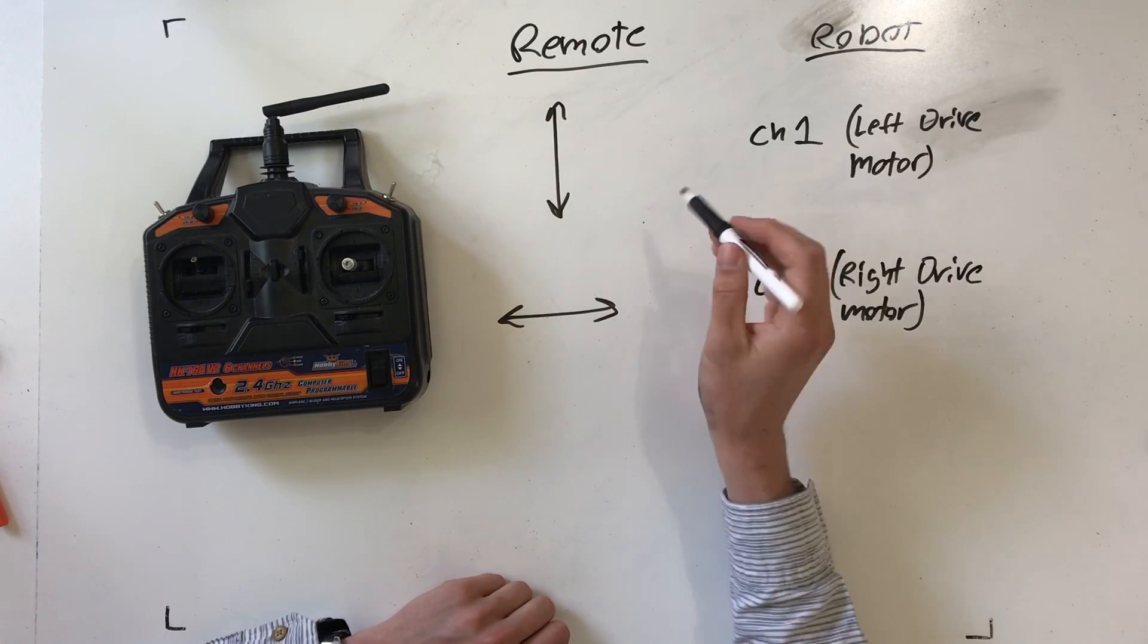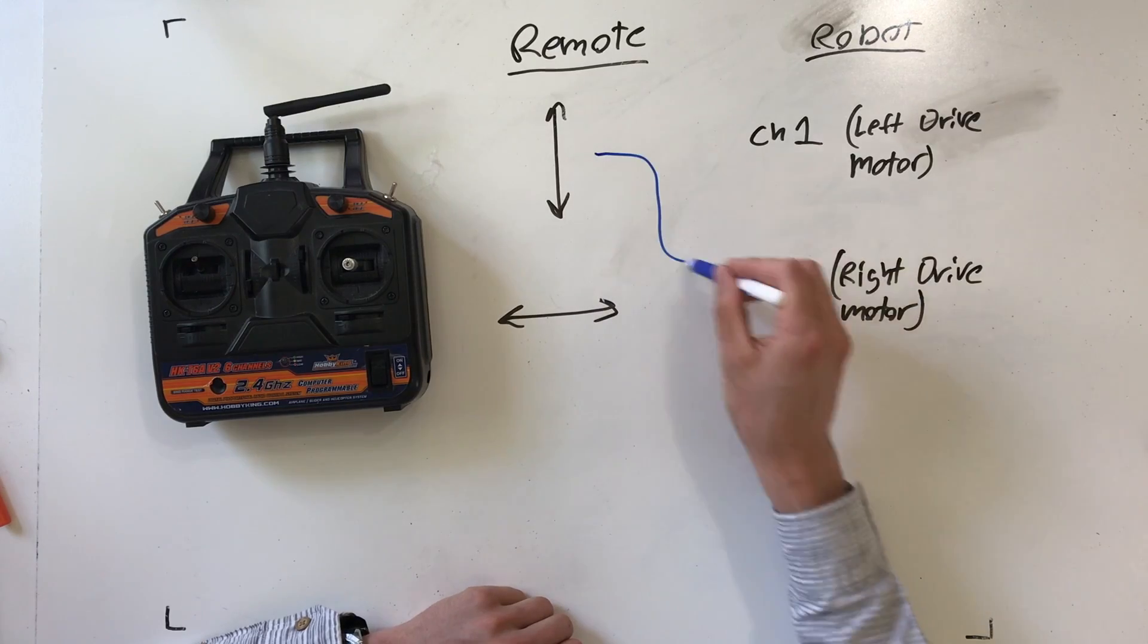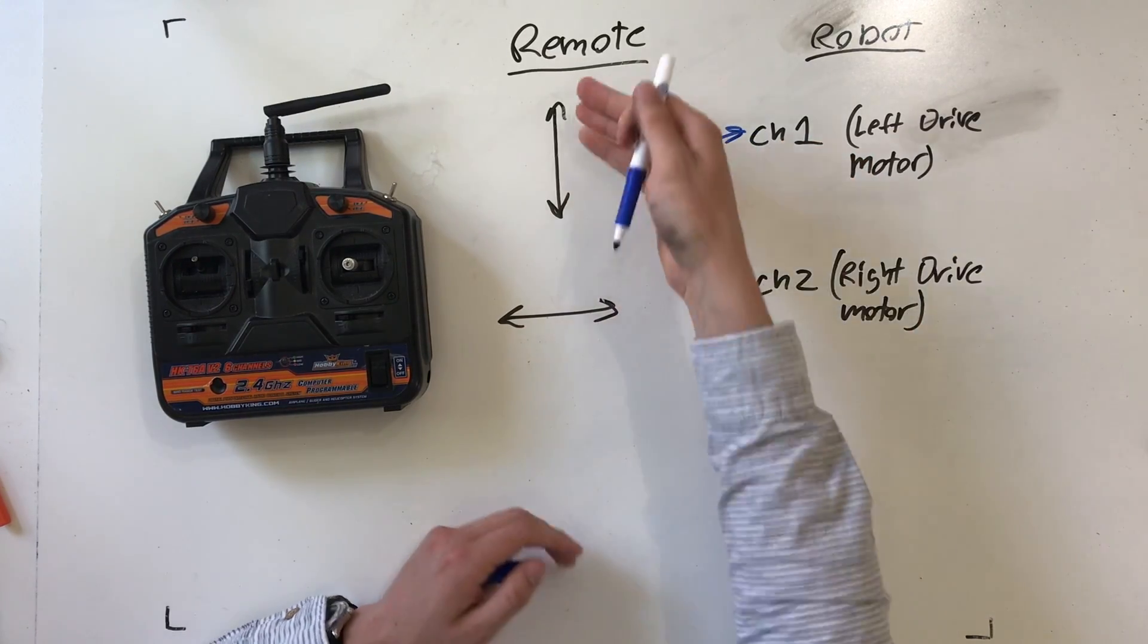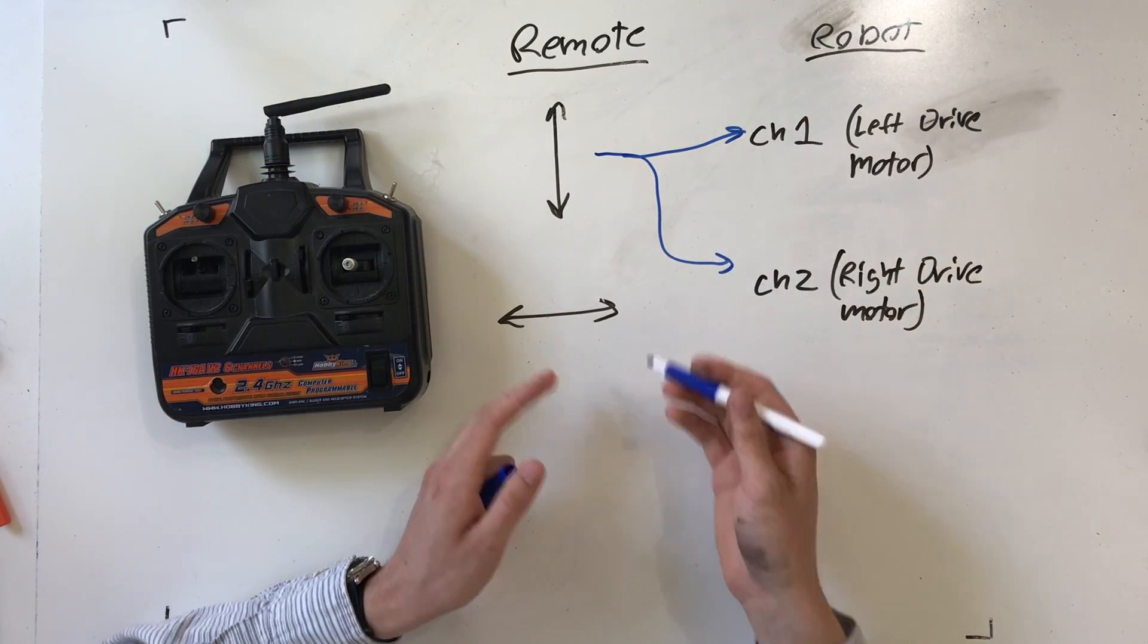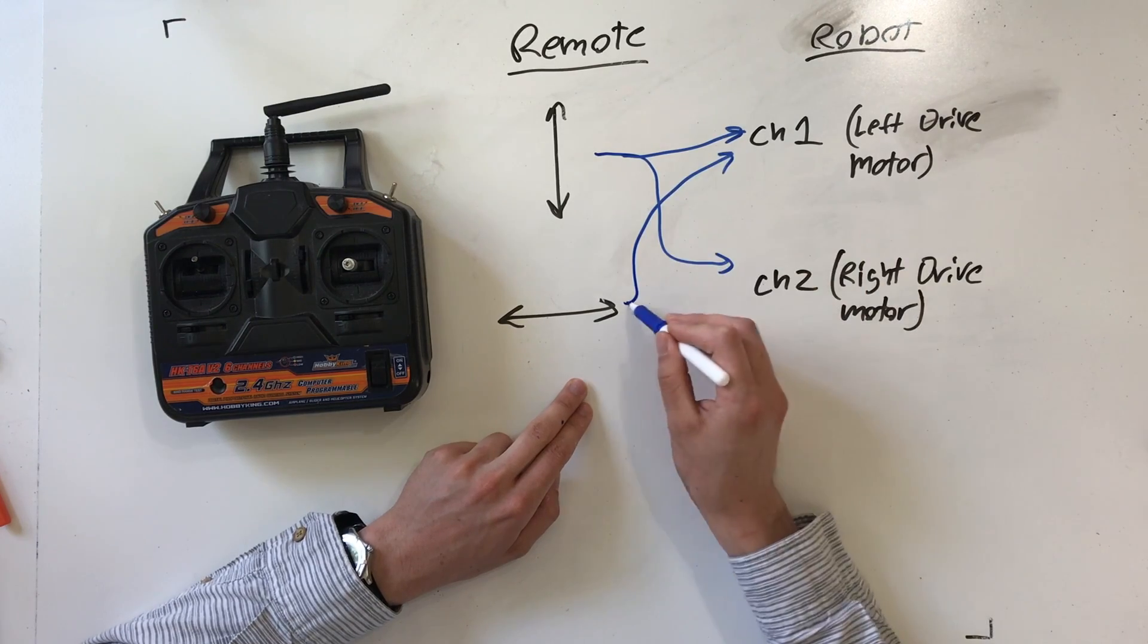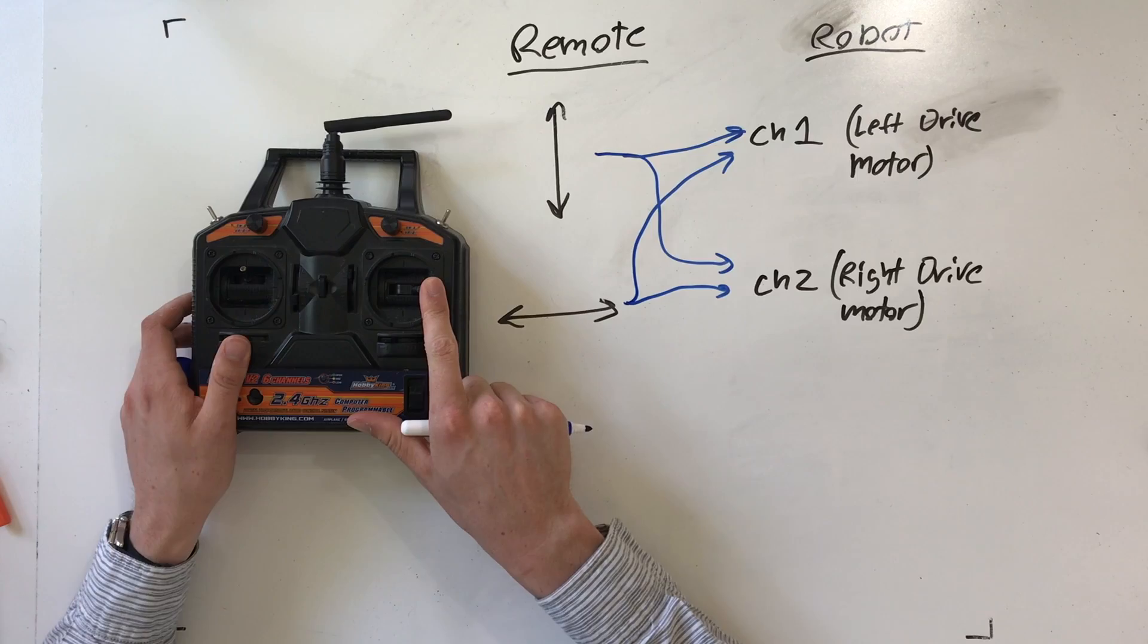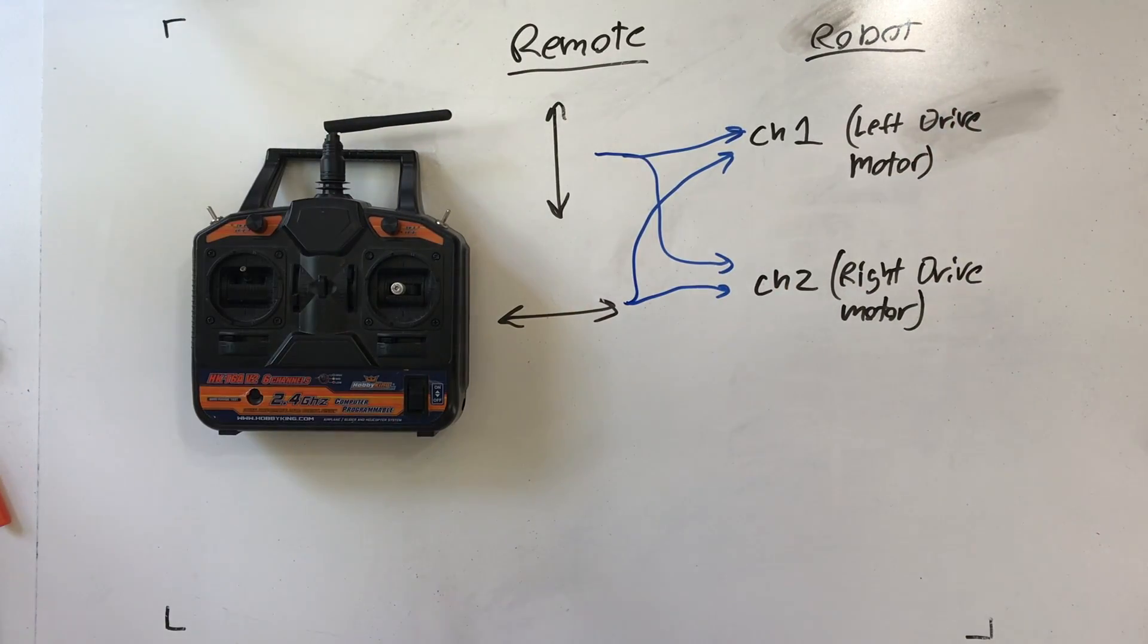So channel mixing basically makes up and down on the remote affect both channel 1 and channel 2. So when you press up, both motors drive and the robot goes forward. You also need to mix the left-right direction with both channels 1 and channel 2. So when you drive the robot to turn right, the left motor drives forward and the right motor drives back. That was a terrible explanation.